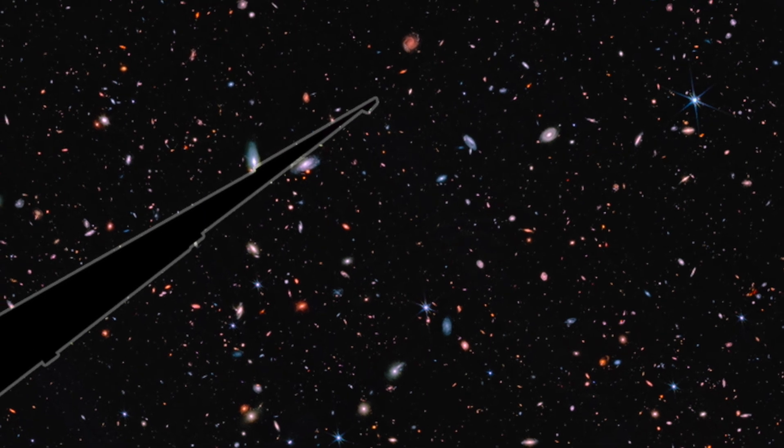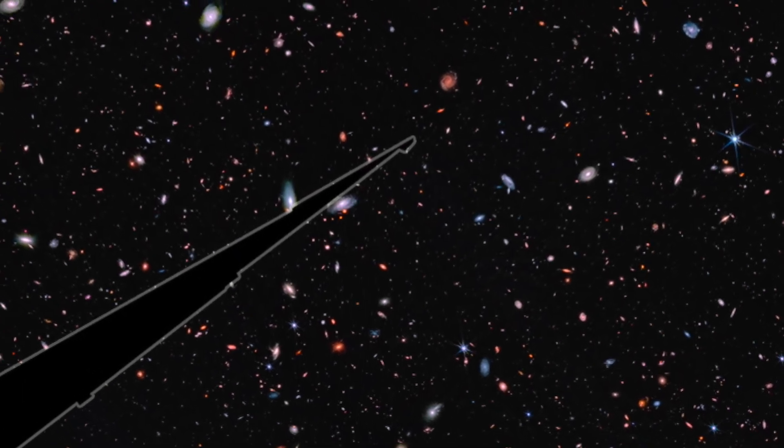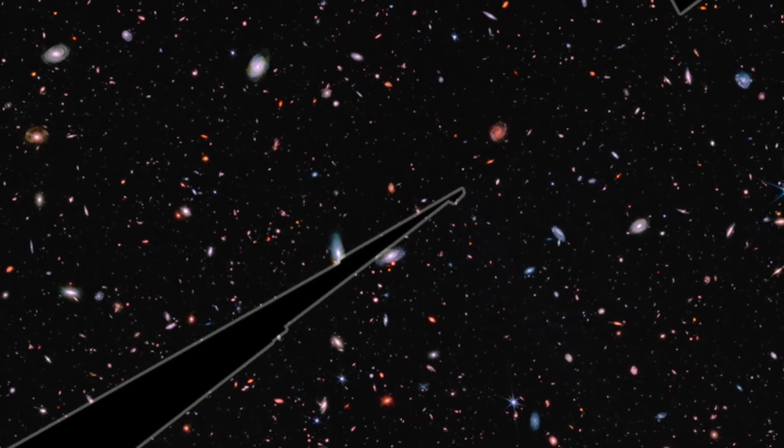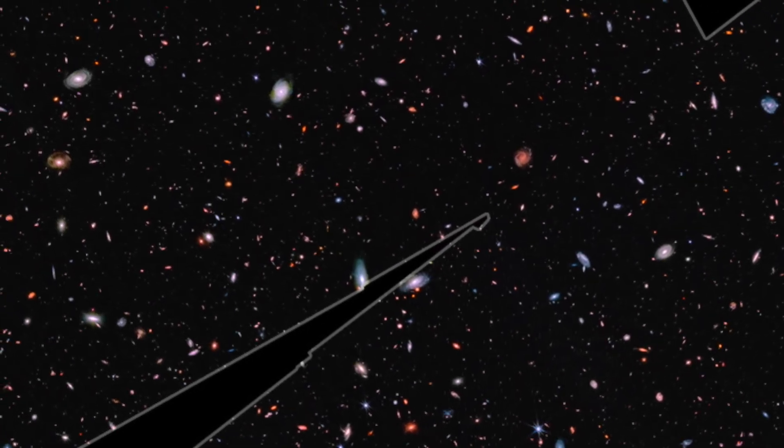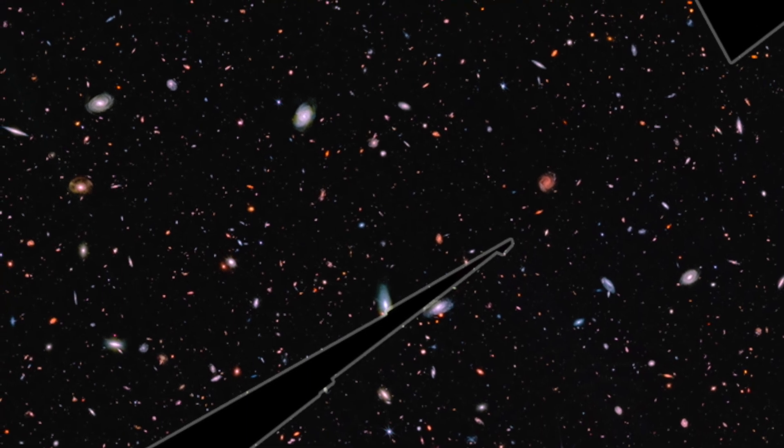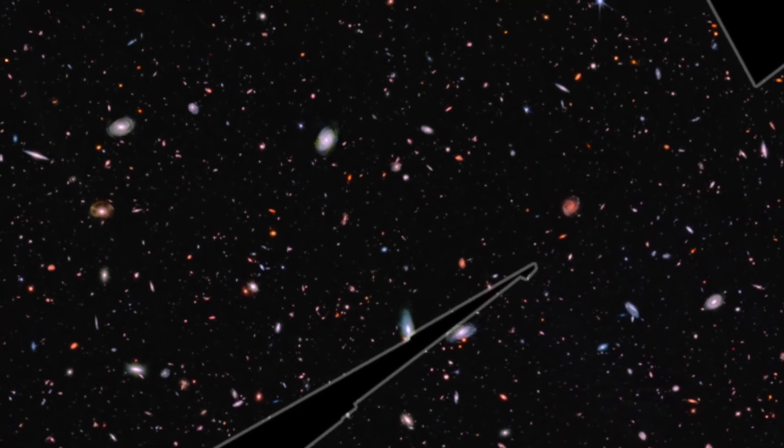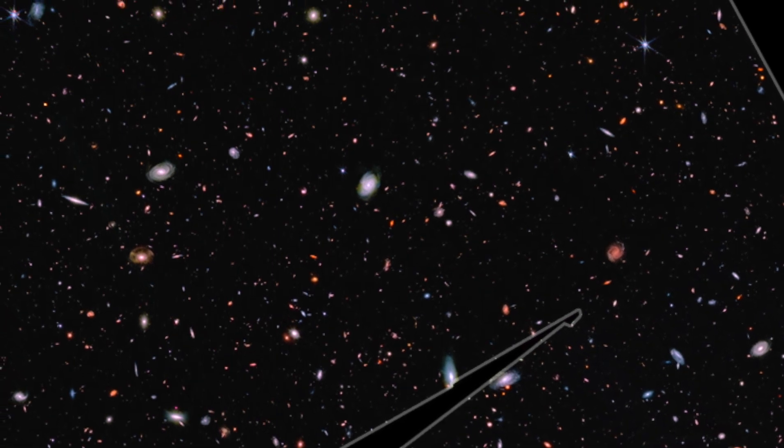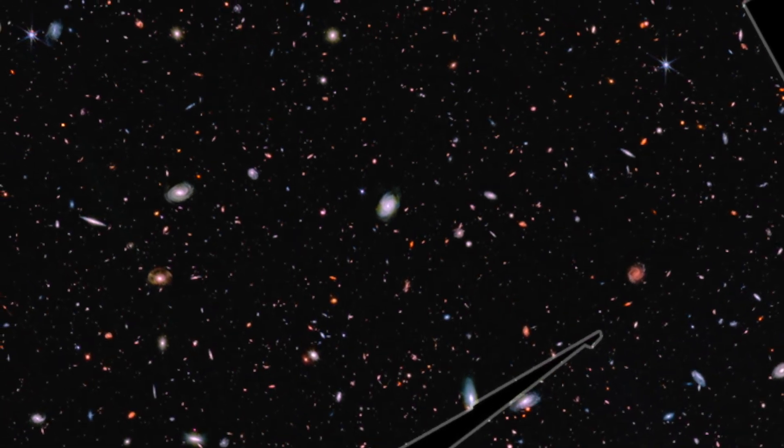First, the near-infrared camera was used for 10 days to observe an area of the sky that has been studied over the past 20 years with various telescopes, including the Hubble Space Telescope. Nearly 100,000 galaxies have been identified here, each captured at some point in its history going back billions of years.